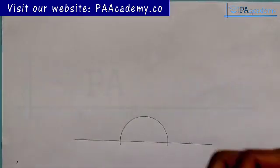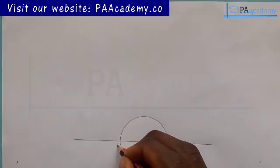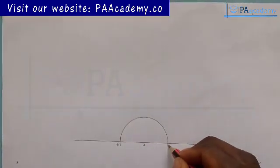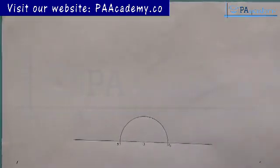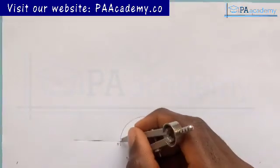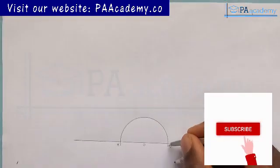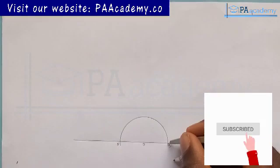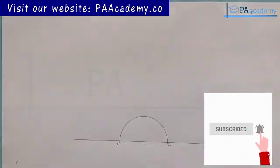Let me call this point O, this point A, and this point B. So this right here is my point A and this right here is my point B.